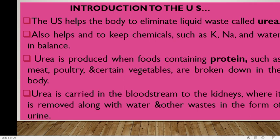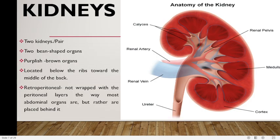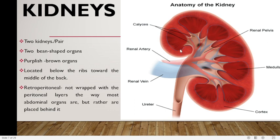At this stage, we should know that the major role of the urinary system is the formation and excretion of urine. The first component of the urinary system is the kidneys — there are two, it's a pair. They are bean shaped and purple-brown organs located below the ribs in the middle of the back. The kidneys are retroperitoneal, meaning they are not wrapped with the peritoneal layers the way most abdominal organs are, but rather are placed behind the peritoneal cavity. We should be able to appreciate the ureter, the renal vein, renal artery, the calyx, renal pelvis, the medulla and the cortex — the outer being the cortex and the inner being the medulla.